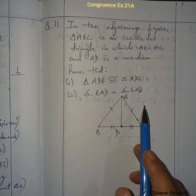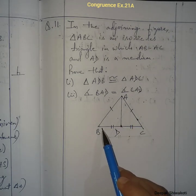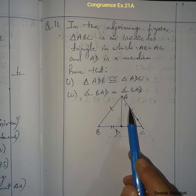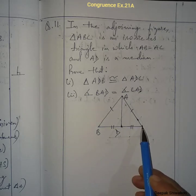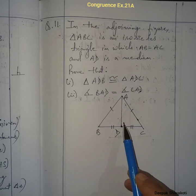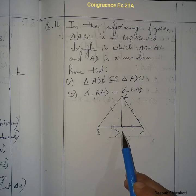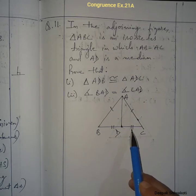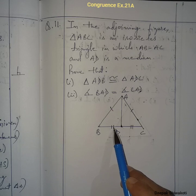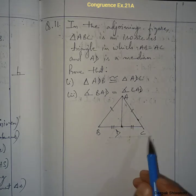In triangle ADB, this side is equal to the corresponding side of triangle ADC. AD is common to both triangles. DB equals DC, as given in the figure. By the Side-Side-Side condition, these two triangles are congruent.